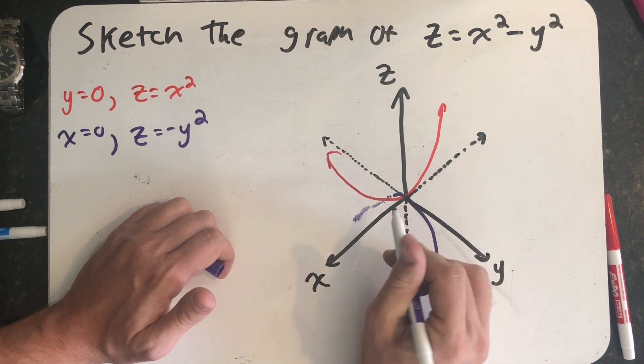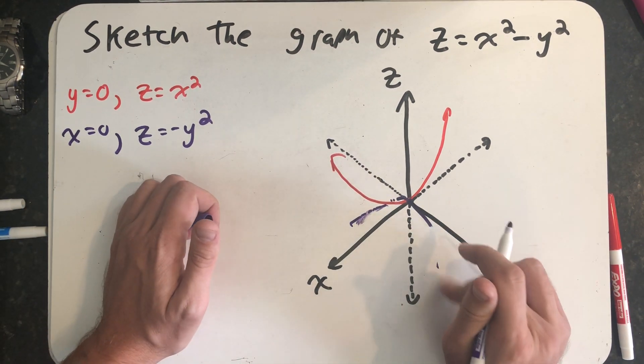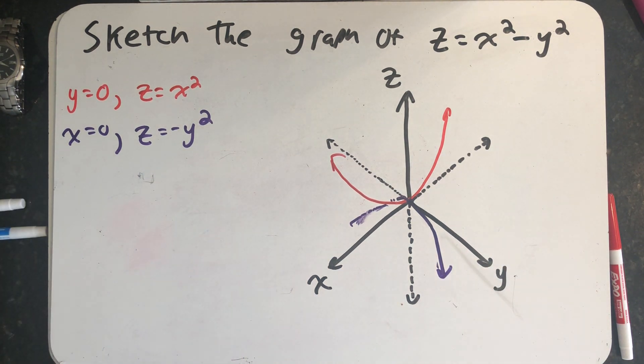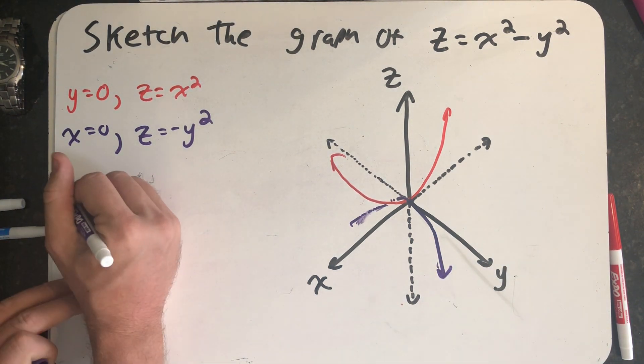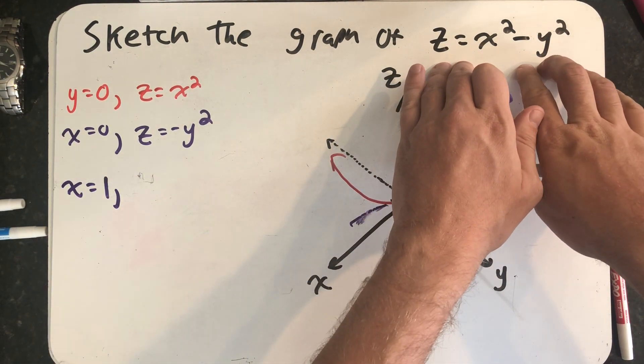That didn't turn out so well on the other side, but we just have that parabola facing downwards here. While we're letting x equal some things, let's imagine that x is equal to one and see what happens to our equation.